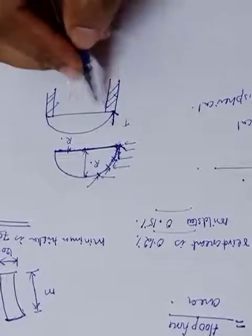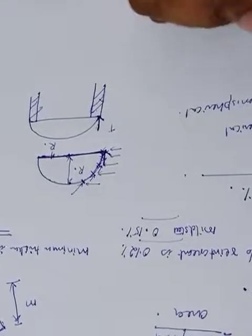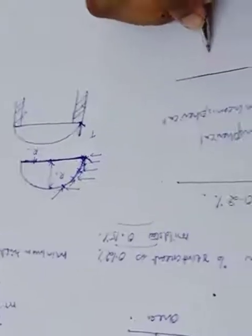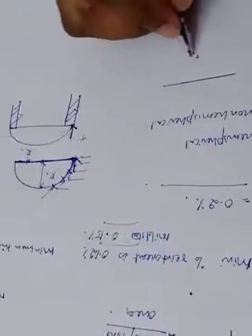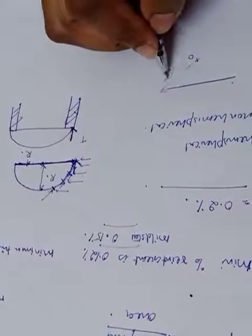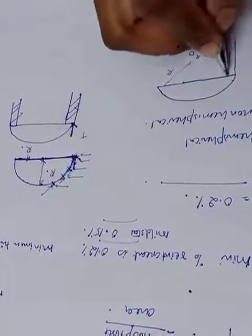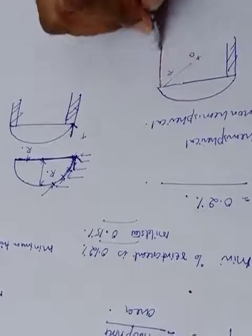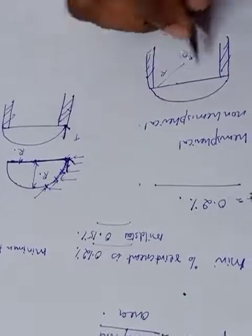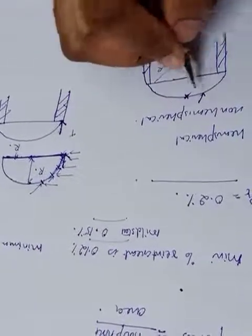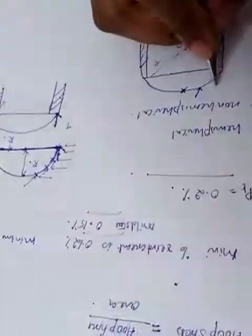But in the case of non-hemispherical domes, if you have the center at O with radius R, and you want to support it here, at the crown you will have both hoop force and meridional thrust.